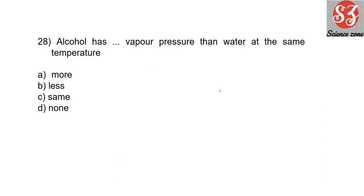Next: 'Alcohol has ___ vapor pressure than water at the same temperature.' Alcohol has more vapor pressure than water at the same temperature, because alcohol is a volatile liquid. Volatile liquids evaporate easily even at room temperature.